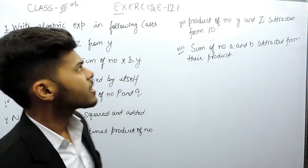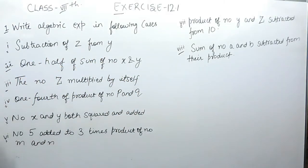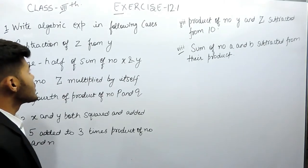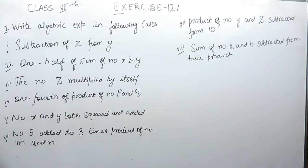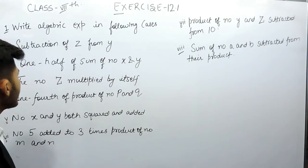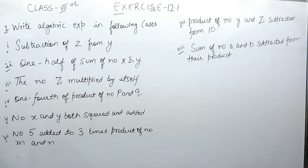Hello everyone. This is the first question of exercise 12.1 of class 7th NCERT. The chapter is algebraic expressions and the first question says write algebraic expression in the following cases. We are given eight parts, which means there are eight conditions and we have to write the corresponding algebraic expression.